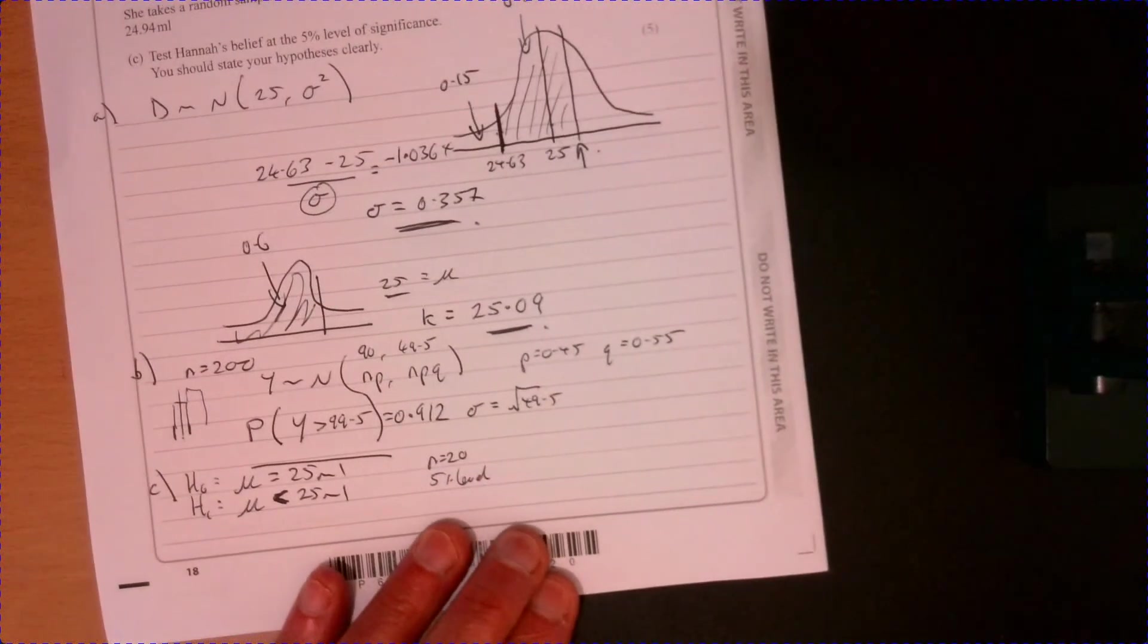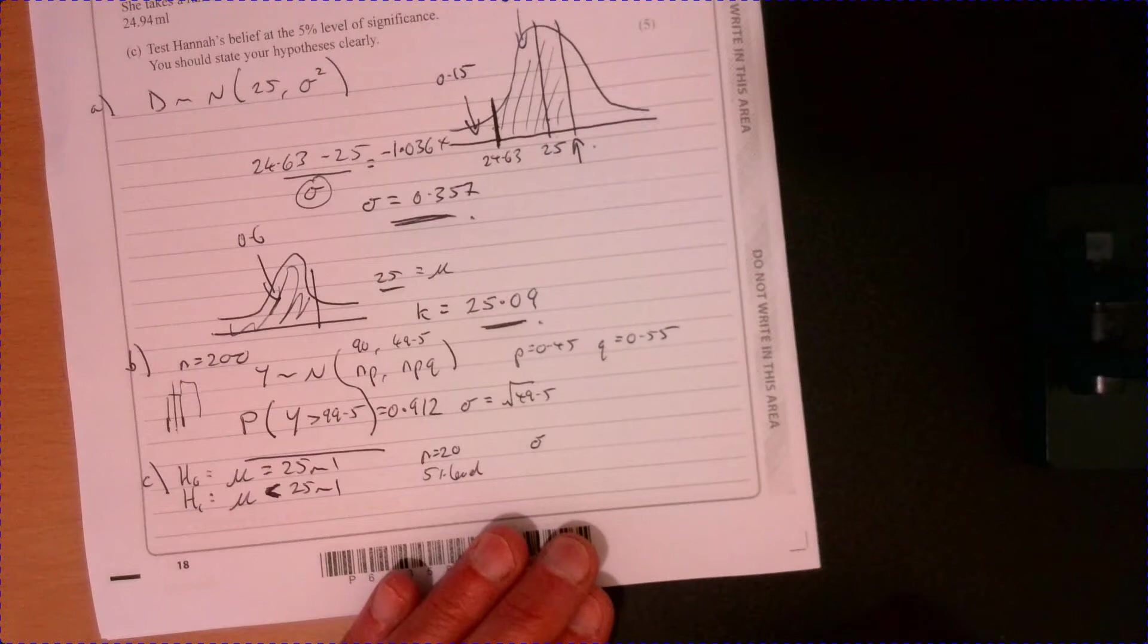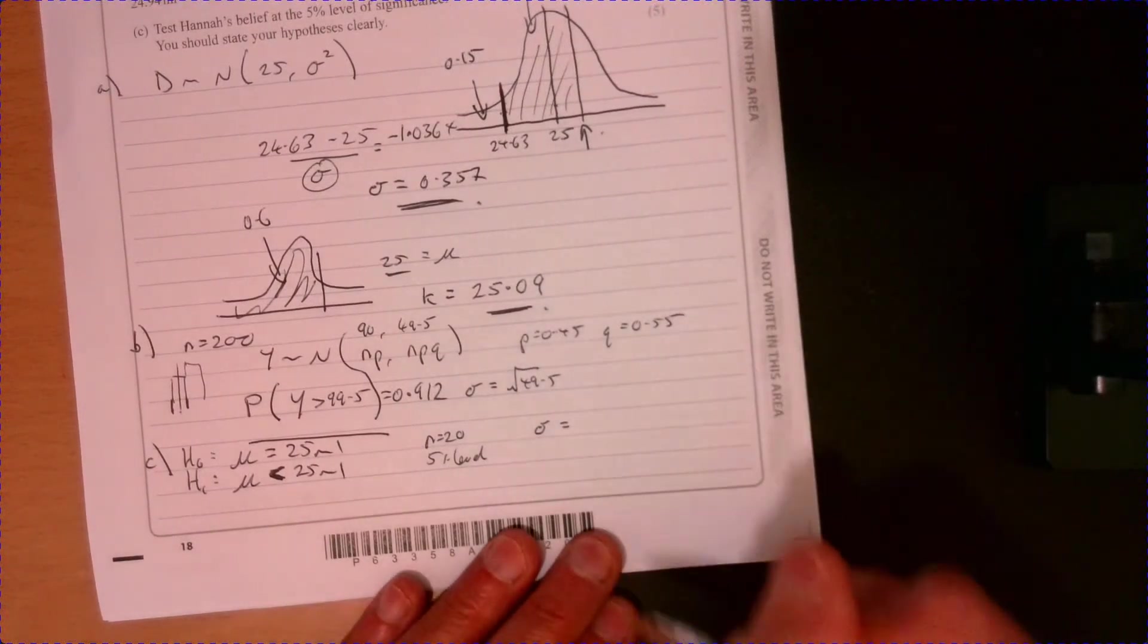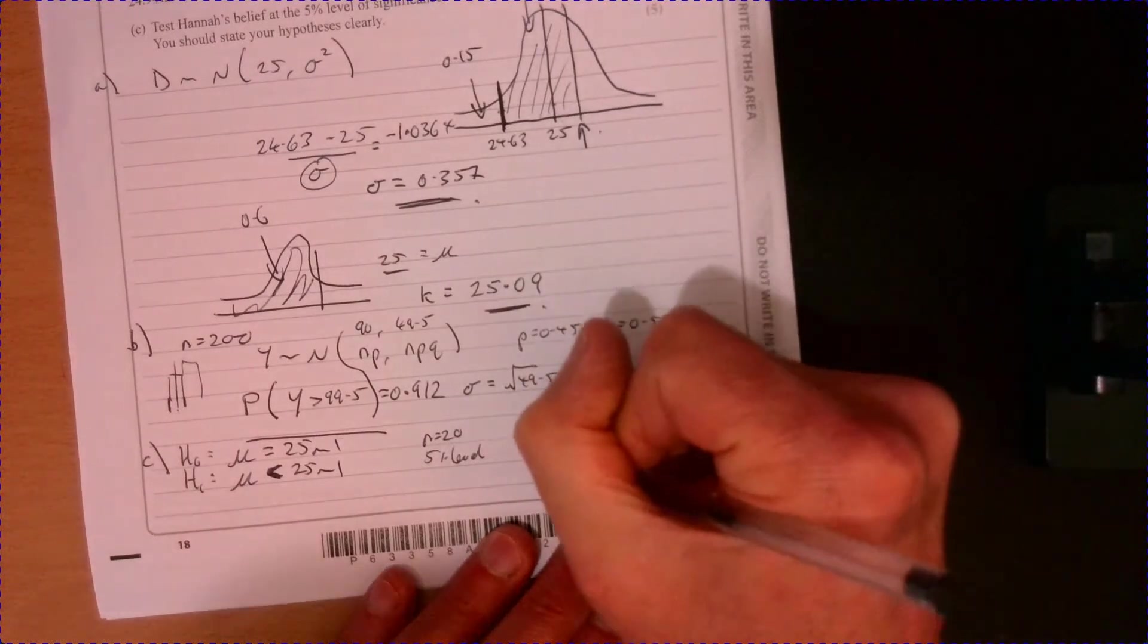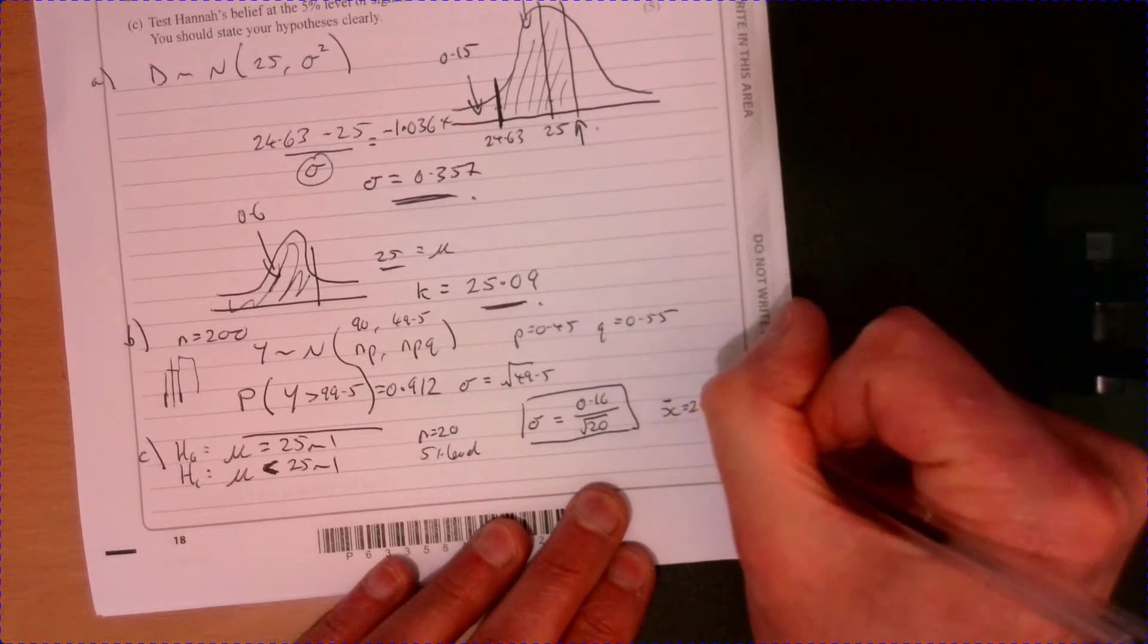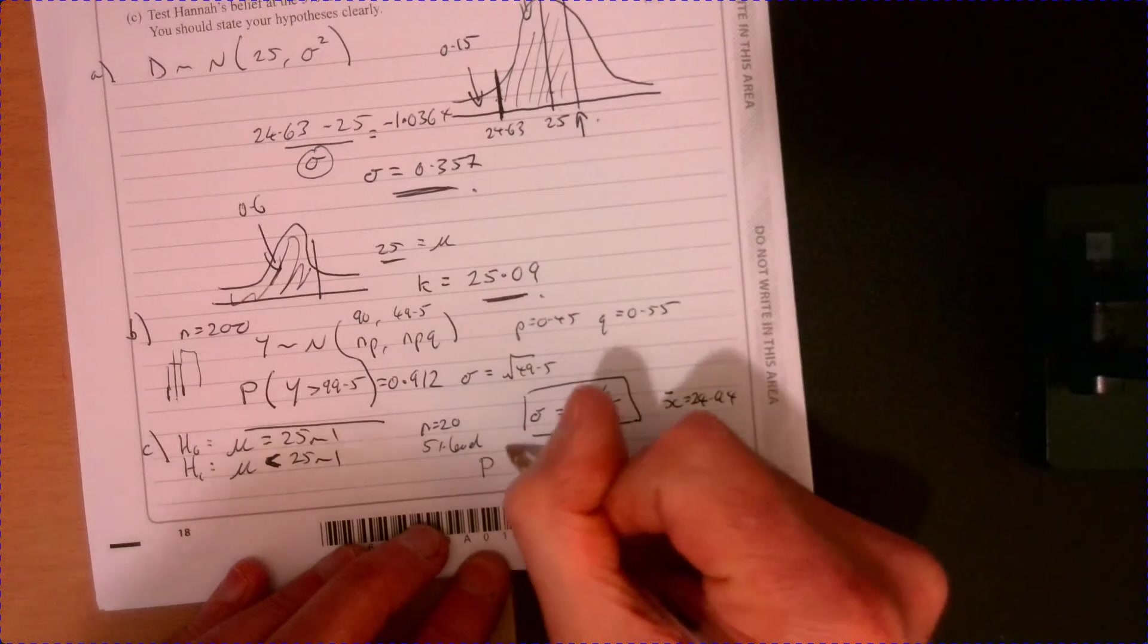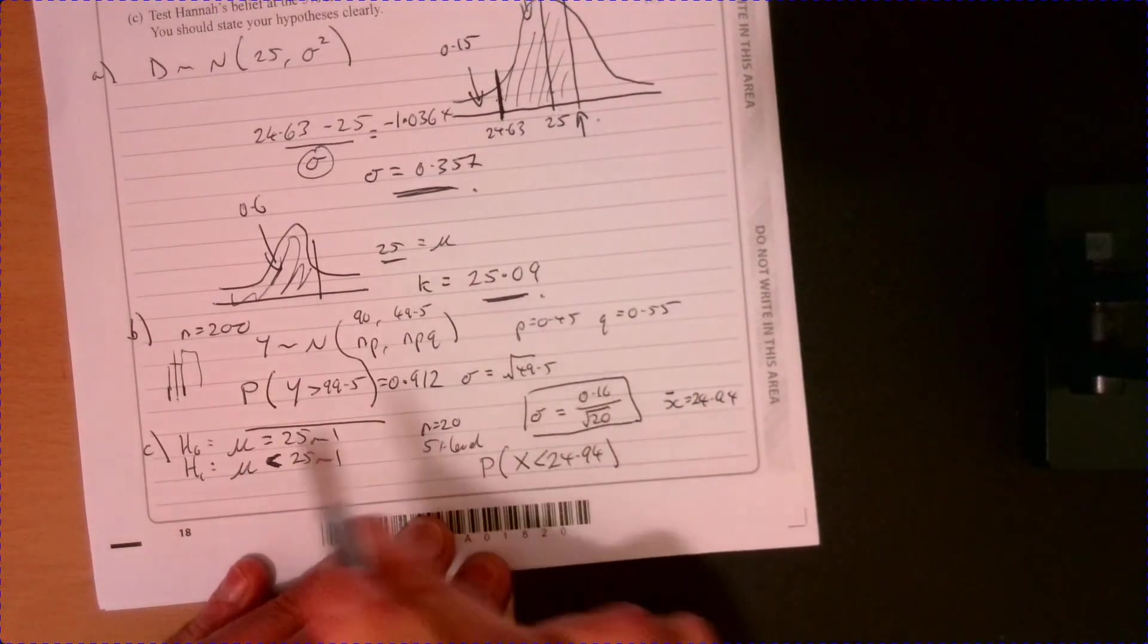Looking at 5 percent level. Now, the problem with this is what's the standard deviation? Because it's not going to be what we were working with before, that 0.16. It's actually going to be equal to 0.16 over root 20. So that's the figure that you need to work with. And we've got X bar is equal to 24.94. So what you actually really need to do is you need to find out: So how much below is this than 25? So is it like an outlier or not?